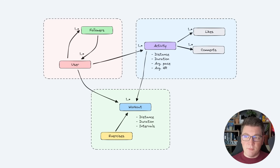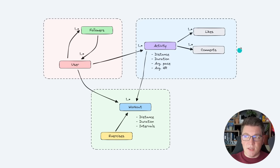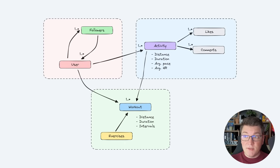Let's take a look at a simplified diagram of the run tracker system. You can see three distinct aggregates in this diagram: the users and followers in one aggregate, the users activity with some likes and comments in another aggregate, and the workout with the corresponding exercises in the third aggregate. I'm also mapping these aggregates into respective entities in my domain representation in the code, and now I want to figure out how I'm going to split this domain into modules.